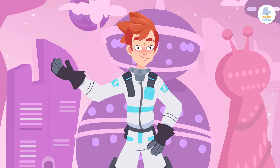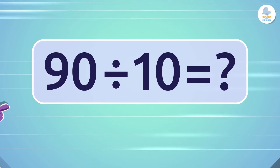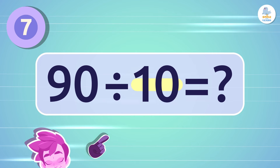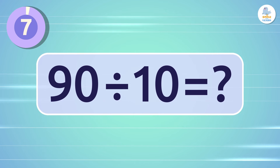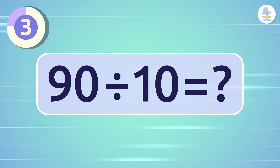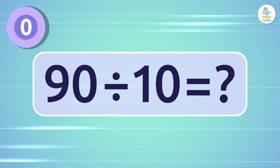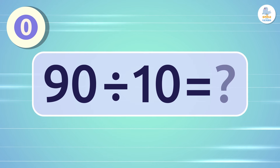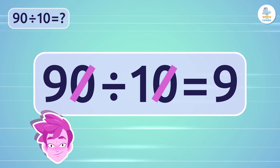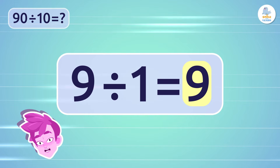Who wants to try it? Let's practice together! What is 90 divided by 10? Very good — it's 9! First we remove the zeros, and then we divide 9 by 1, which gives us 9.